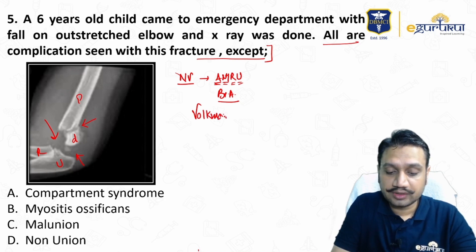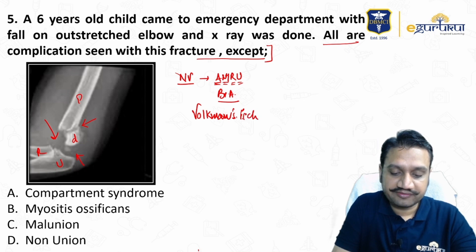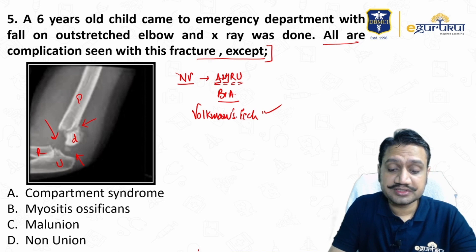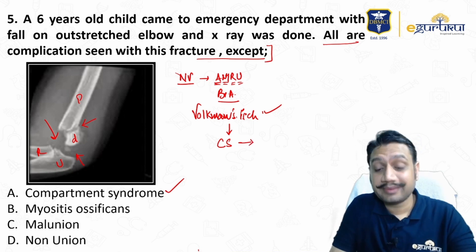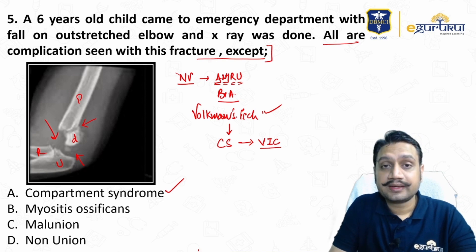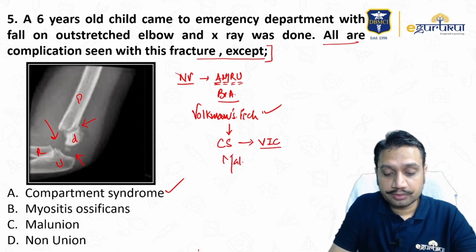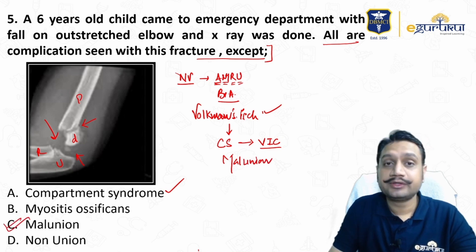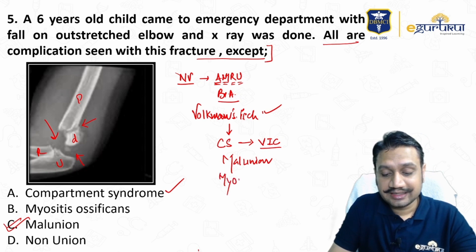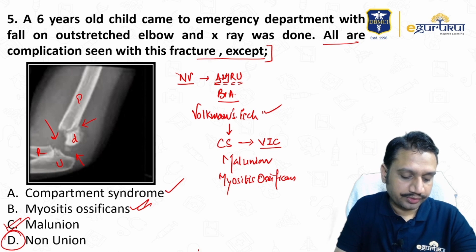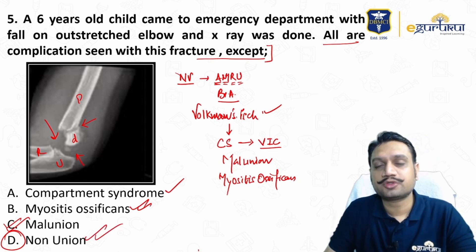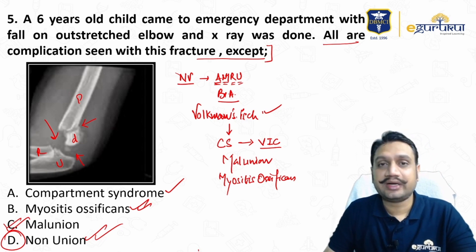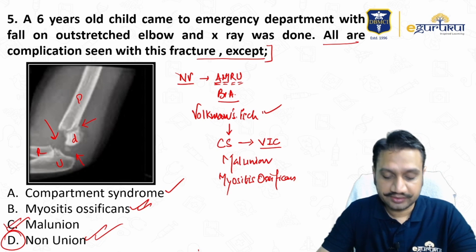Increased pressure around the muscle causing loss of blood supply leads to Volkmann's ischemia. If it continues, it causes compartment syndrome, and eventually Volkmann's ischemic contracture with permanent soft tissue damage. The most common late complication of supracondylar fracture is malunion leading to gunstock deformity. Myositis ossificans — abnormal bone formation — is also commonly seen around the elbow. Non-union is the least likely or absent complication, because it is a metaphyseal injury in a highly vascular area and typically heals well, similar to a Colles' fracture.